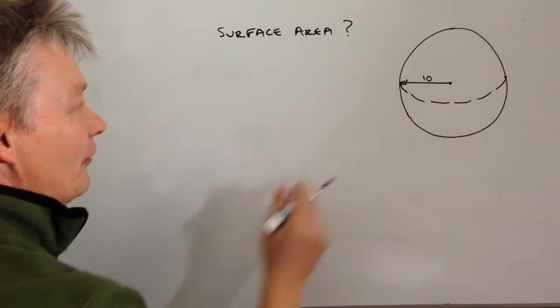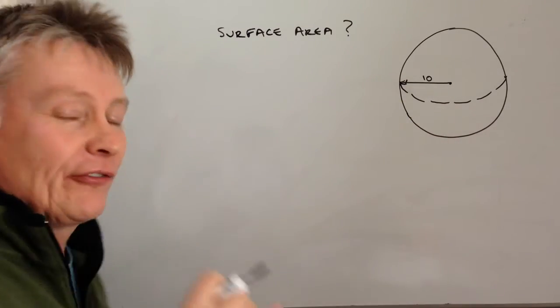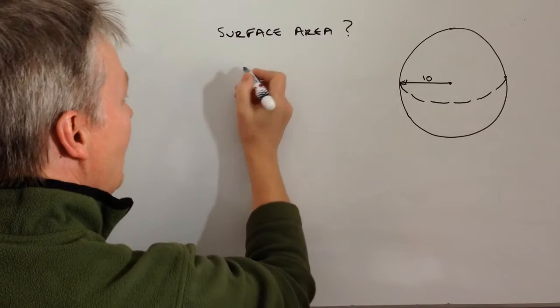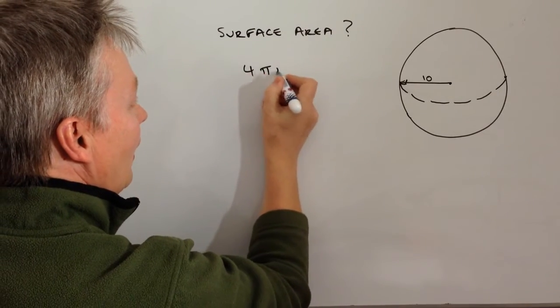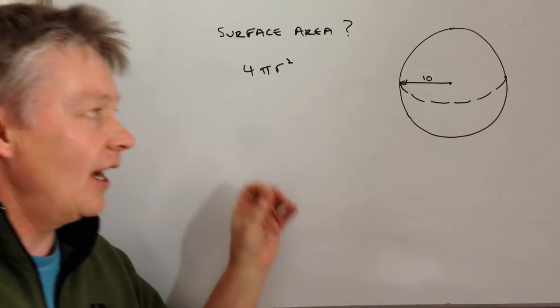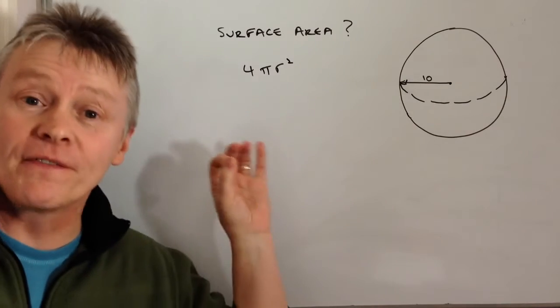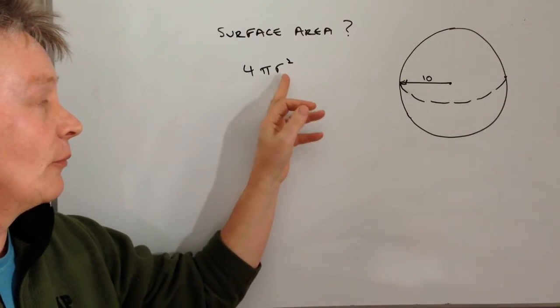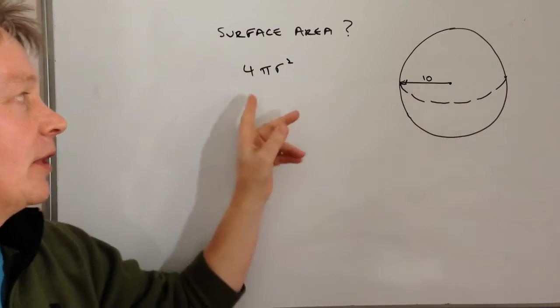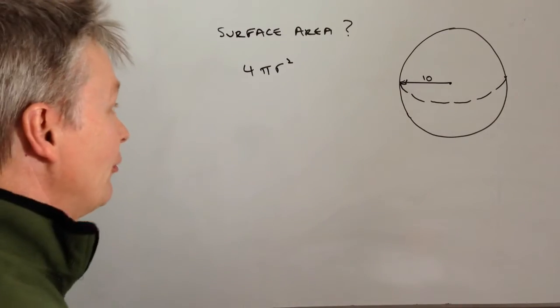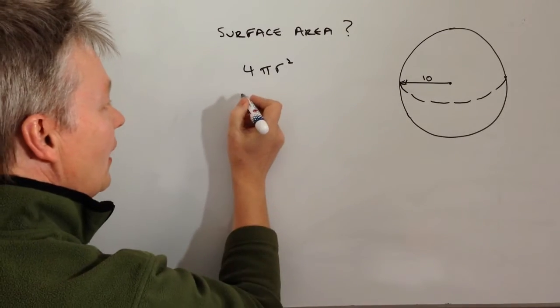So the surface area, providing we know the radius, the formula that we need is 4πr². Providing we've got the component parts of that formula and we've got the radius, we know what π is, and it's just the number 4. We just plug the numbers in.